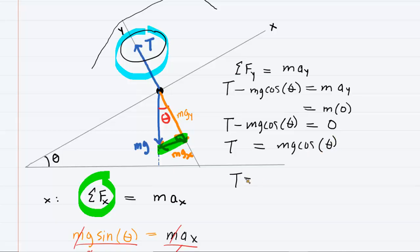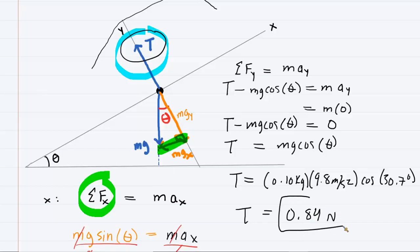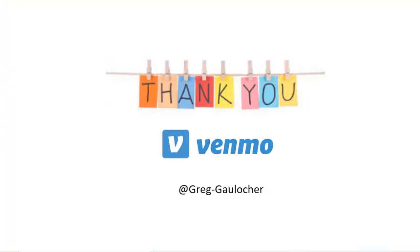Now we plug in the known values: mass is 0.1 kilograms, g is 9.8 m/s², and theta from part A is 30.7 degrees. It's nice to see how part A helps us find part B. Plugging this into the calculator, we get a tension of roughly 0.84 newtons — the correct answer to part B. Thanks again for watching. If you're interested in making a small donation, I'd greatly appreciate it, but please don't feel obligated.